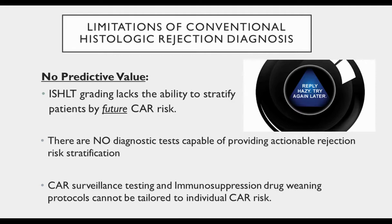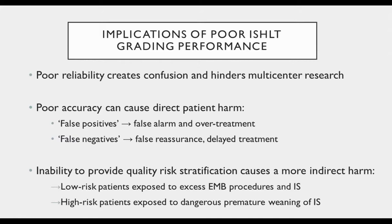ISHLT grading also lacks the ability to stratify patients by future rejection risk, which represents a major barrier to personalized post-transplant management. Poor inter-rater agreement creates confusion and hinders multicenter research. Poor accuracy causes direct patient harm — false positives cause false alarm and over-treatment with dangerous immunosuppression, while false negatives result in false reassurance and potentially delayed treatment. The inability to provide risk stratification causes indirect harm, with low-risk patients exposed to excessive biopsy procedures and immunosuppression, while high-risk patients may receive insufficient surveillance and dangerous premature weaning of immunosuppression.